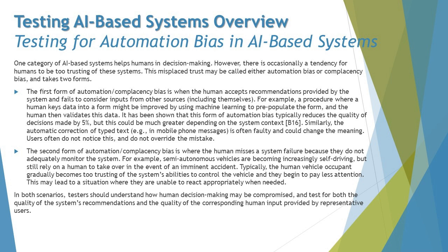The second form of automation or complacency bias is where the human misses a system failure because they do not adequately monitor the system. For example, semi-autonomous vehicles are becoming increasingly self-driving but still rely on a human to take over in the event of an imminent accident. Typically, the human occupant gradually becomes too trusting of the system's ability to control the vehicle and begins to pay less attention, and may be unable to react appropriately when needed.